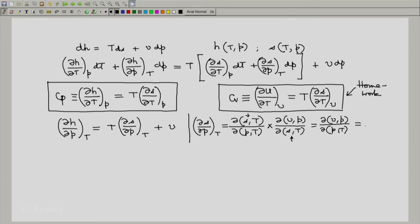This equals negative partial of V with respect to T at constant P. Hence, partial of H with respect to P at constant T equals minus T partial of V with respect to T at constant P plus V.